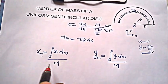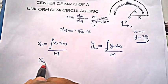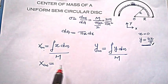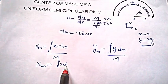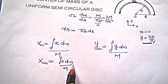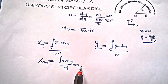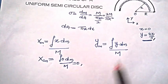Let us come back to the integration. Since x = 0, we can write the xcm integral as ∫0 · dm / total mass, which equals 0. So let us solve for ycm.